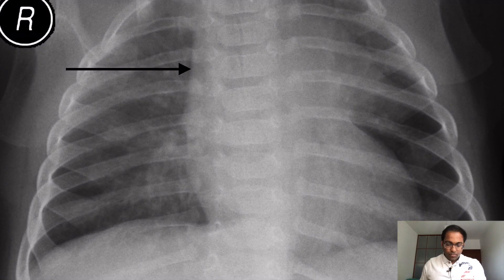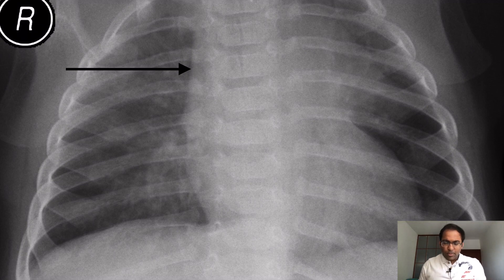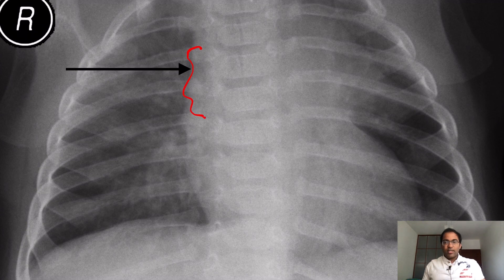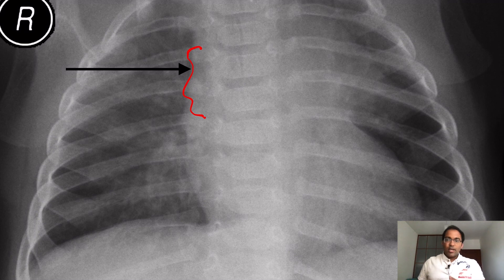This chest X-ray shows the absence of the thymic shadow in a few-months-old infant. We can clearly see there is no thymic shadow, whereas normally we would see the sailboat sign of the thymus. This is the absence of the thymic shadow.